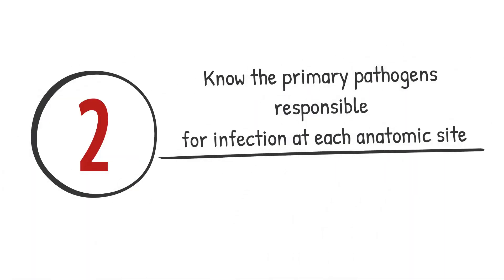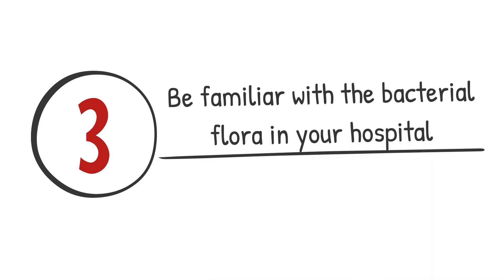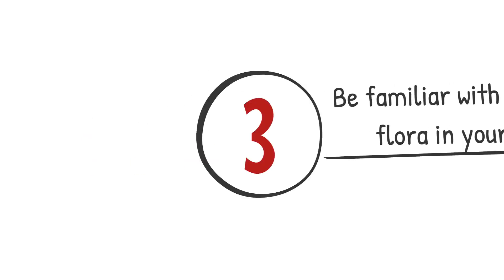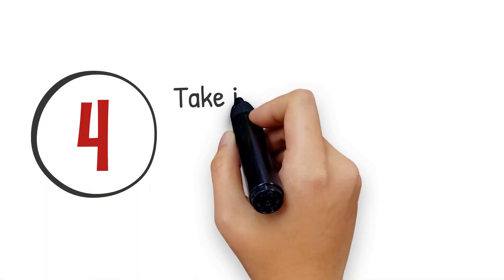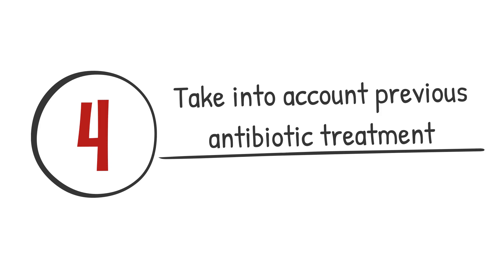Step 2: If bacterial infection is suspected, determine the likely anatomic site of the infection and apply the empiric regimens just discussed. Step 3: In choosing the antibiotic regimen, it is important to take into account the flora in your hospital and unit. The antibiogram I shared reflects the national averages and may differ in your community and hospital. Step 4: Take into account recent treatment with antibiotics. If the patient has received an antibiotic within the last two to four weeks, assume the present infection is resistant to the antibiotic that was previously prescribed.